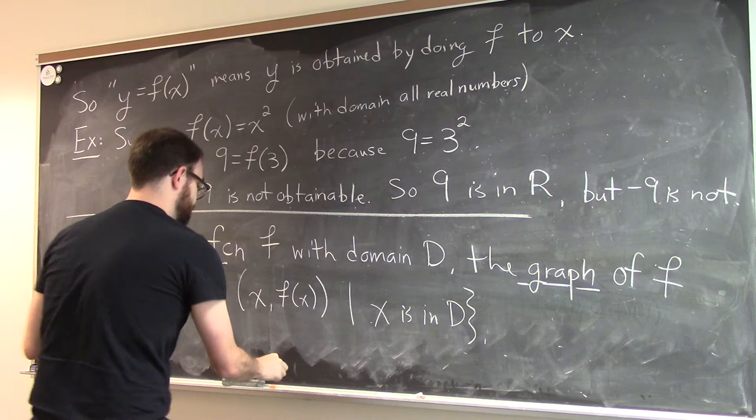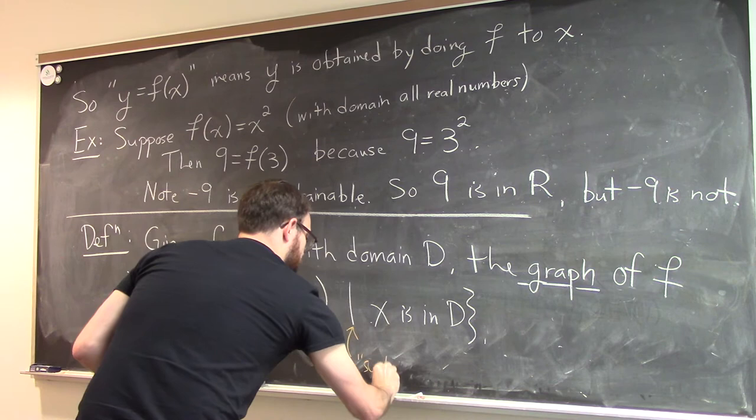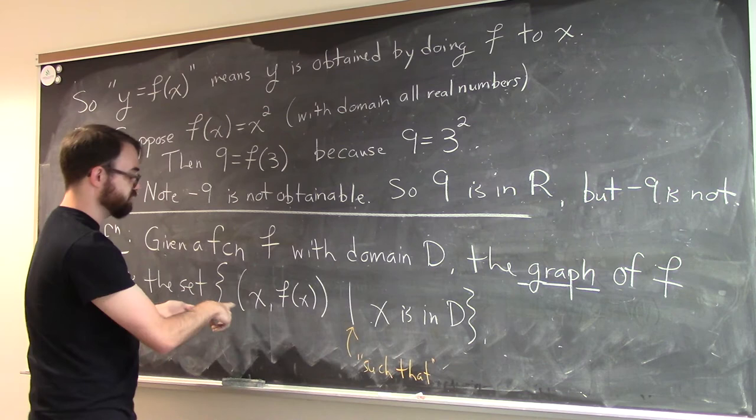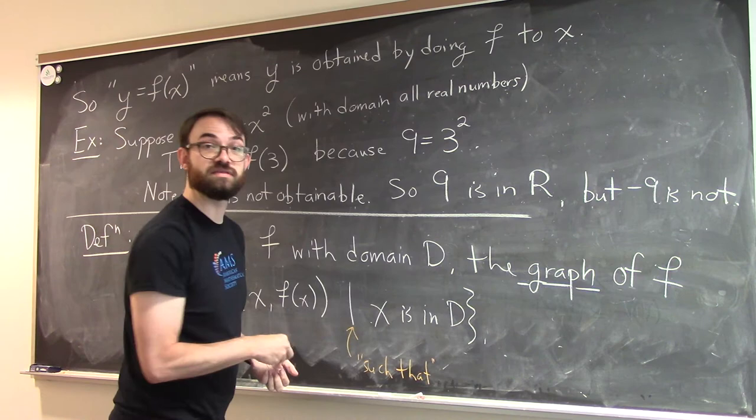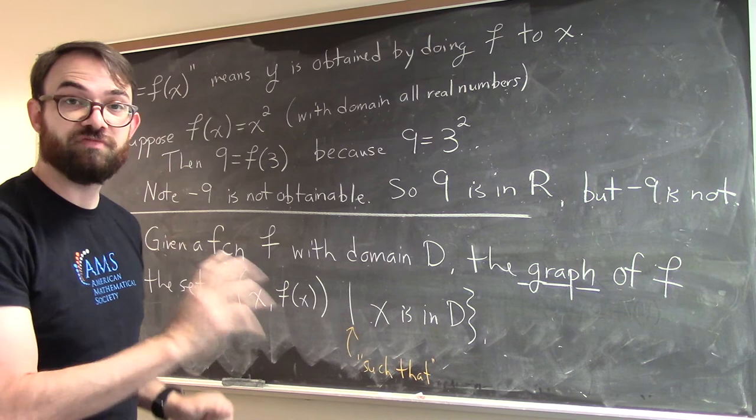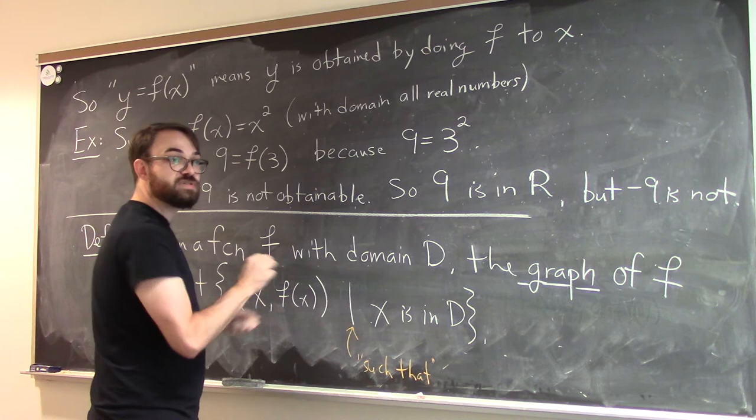such that x is in d. What do I mean by this vertical bar here? This vertical bar should read as such that. So it's the set of all ordered pairs, x comma f of x, such that x is in the domain. So you let your inputs range, or let me say vary, you let your inputs vary over the entire domain d. You compute all of these corresponding outputs, and then you just plot them as points in the coordinate plane.